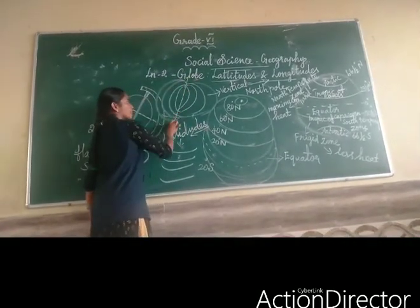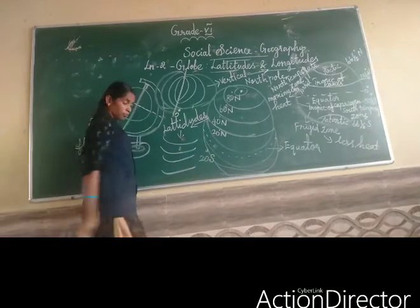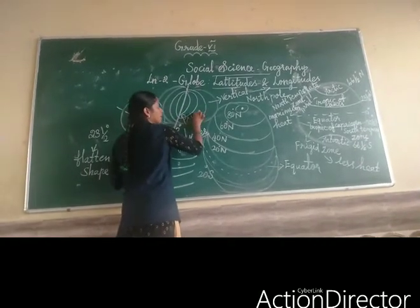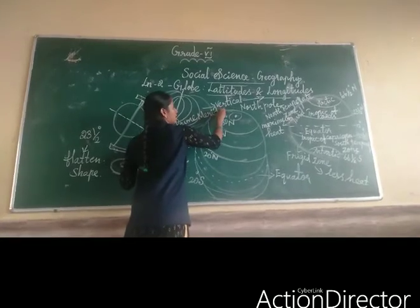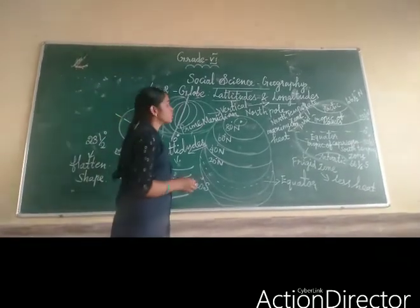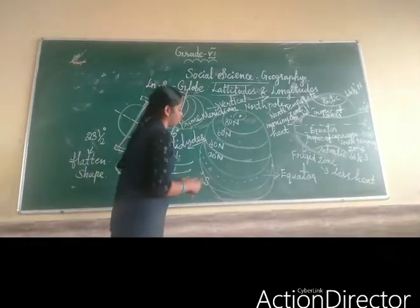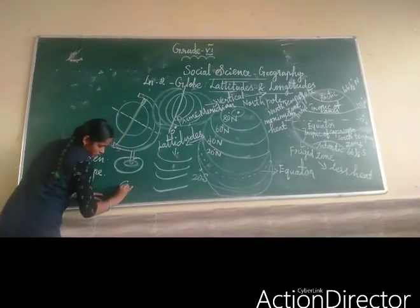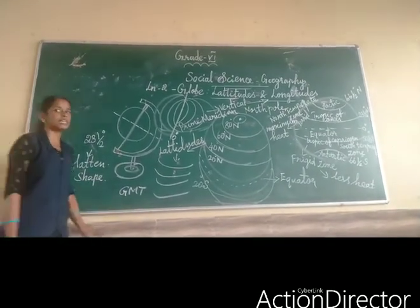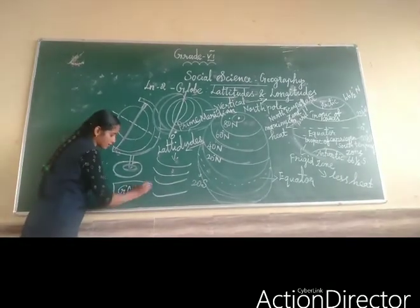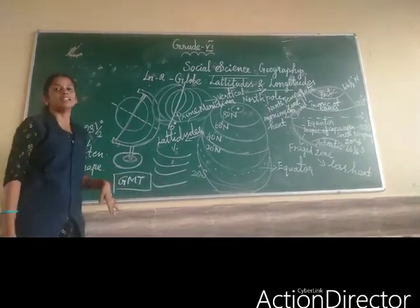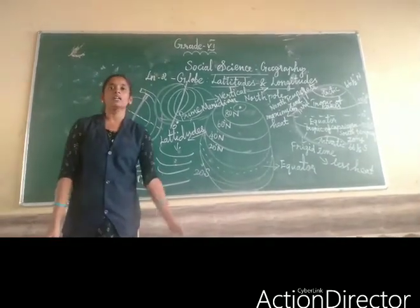This line is always at 0 degrees, and it is called the prime meridian. By using the prime meridian, we are calculating the times. Have you seen GMT? GMT means Greenwich Mean Time. This time is the standard time. While reading through the session of our lesson, we can understand how we calculate those things.